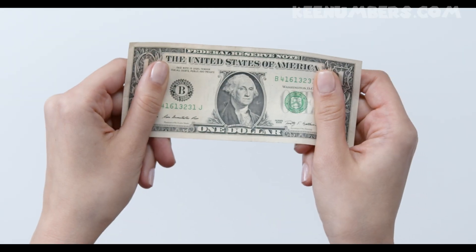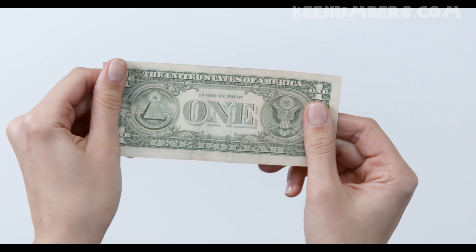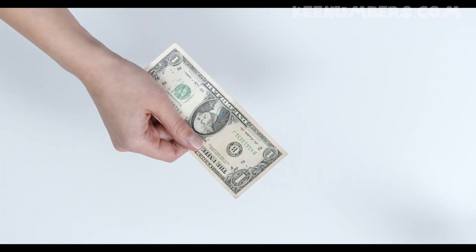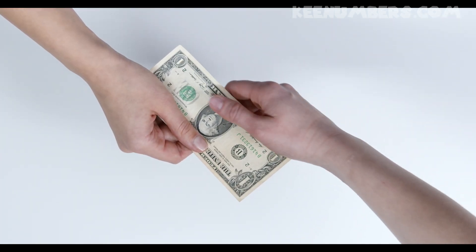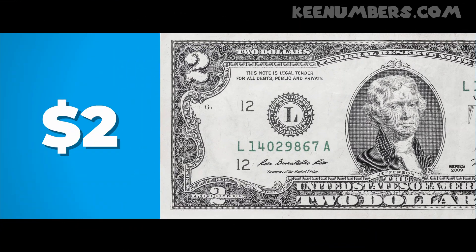This is a dollar bill and it's worth one hundred cents — one dollar, at least in the United States of America. Now the two dollar bill is legal tender and it's in circulation, so you can get one from the bank if you have two dollars — just ask.